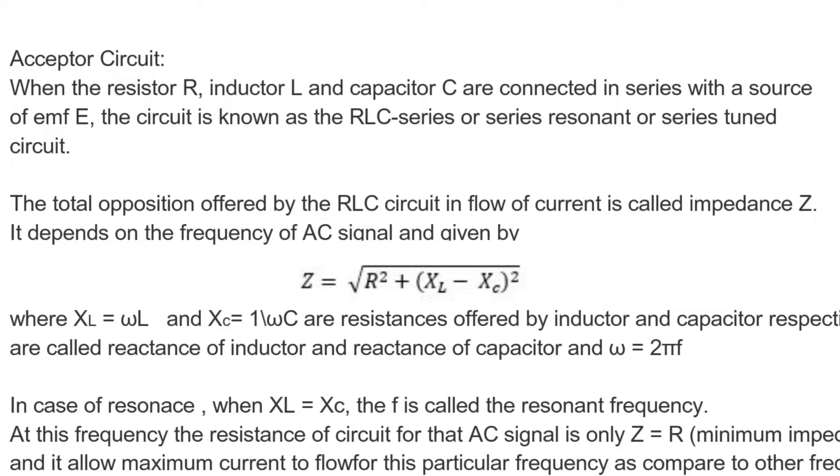The total opposition offered by the RLC circuit in flow of current is called impedance. It depends on the frequency of AC signal and given by Z is equal to square root of R squared plus XL minus XC whole squared.